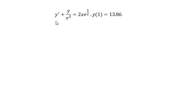We have the first derivative of y plus y over x to the power of 2 equals to 2x multiplied with e to the power of 1 over x, and we have x equals to 1, so y will get about 13.86. I will show the technique how to answer the question.